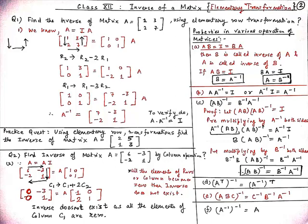Since A equals IA, write down A = [[1, 3], [2, 7]] on the LHS equal to the identity matrix [[1, 0], [0, 1]] dot A. Now, the a11 element is already 1, so skip it and come to a21 which is 2. Make it 0 by applying R2 → R2 minus twice of R1. Row 1 elements are unaffected, remaining as 1, 3 on the left and 1, 0 on the right. Then a21 becomes 2 minus 2×1 = 0.